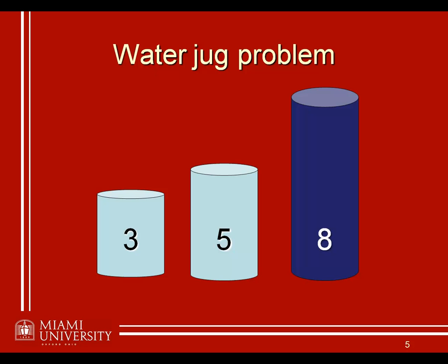The problem goes something like this. Imagine you have 3 different jugs — 3 different containers — as it's typically set up. There are a number of variations on the problem, but we're going to stick with this current example. You have a 3-gallon, a 5-gallon, and an 8-gallon container.